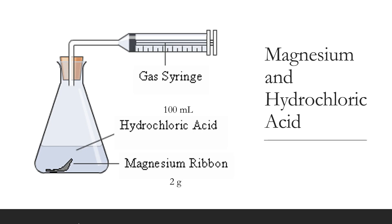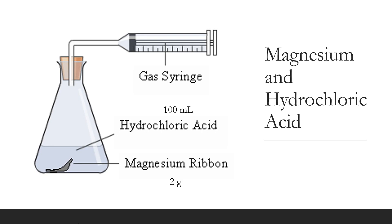So we have here 100 milliliters of hydrochloric acid and a 2-gram magnesium ribbon. The question is: what's going to run out first? Am I going to run out of hydrochloric acid or am I going to run out of magnesium? And how much product am I trying to capture or estimate? Well, we can use Bill's Box to do this.